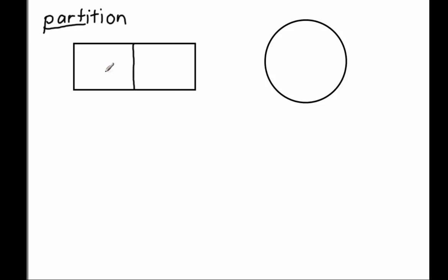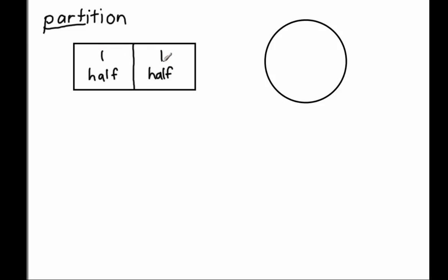What do I call this share right here? Anytime that you have one of what it takes two of to make a whole, we're going to call that one share a half. This is a half, and this share right here is also called a half. So we have a whole that is partitioned — that means broken — into two equal shares. What do we call one of what it takes two of to make a whole? We call that share a half.